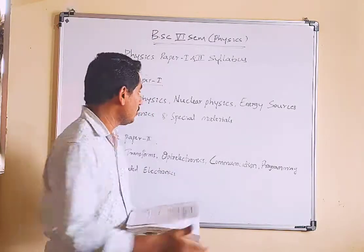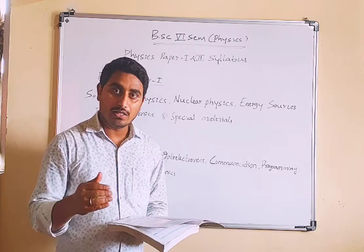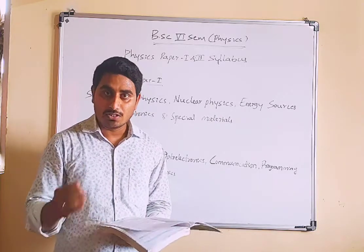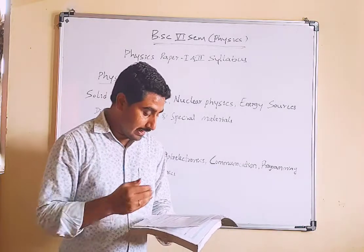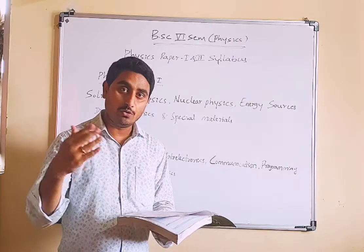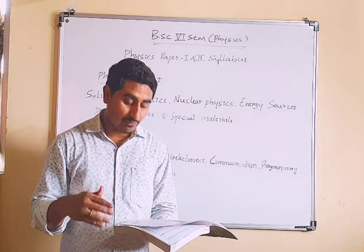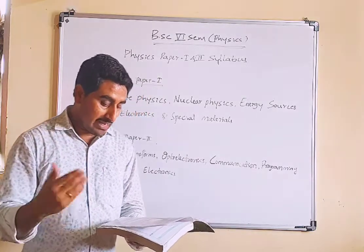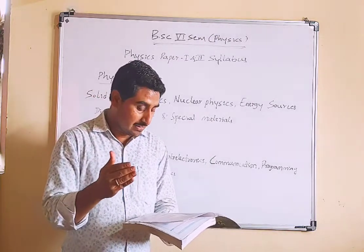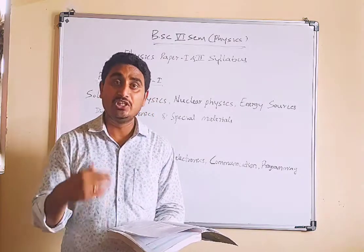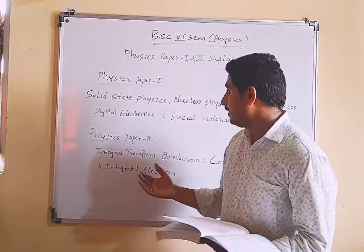Unit 3 covers nuclear physics. We will discuss alpha decay, beta decay, nuclear models including the liquid drop model, the semi-empirical mass formula, nuclear fusion based on the liquid drop model, the shell model, and magic numbers. Nuclear instruments such as the GM counter, scintillation counter, linear accelerator, and cyclotron will also be covered.